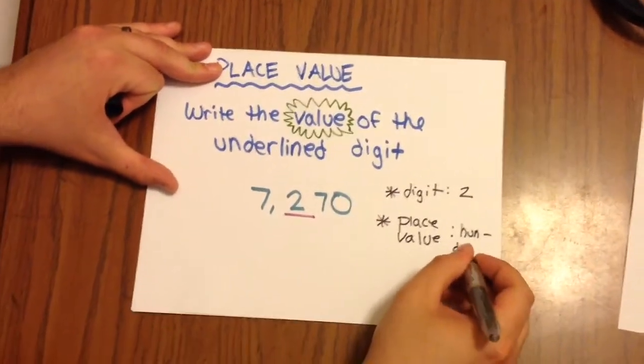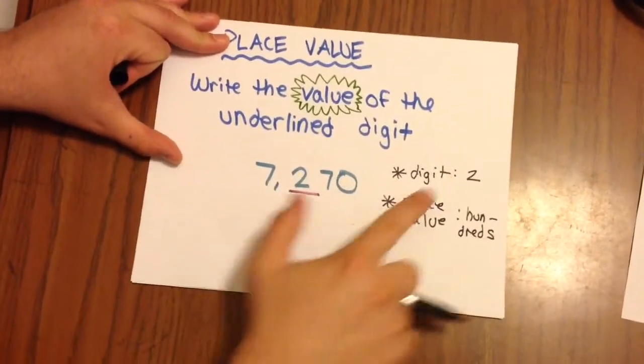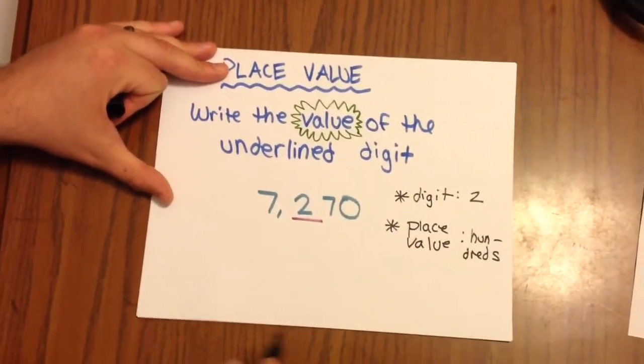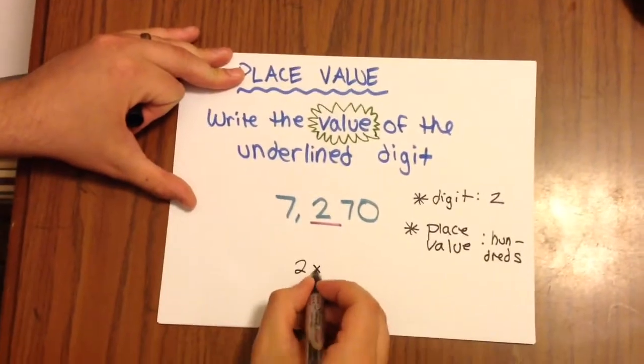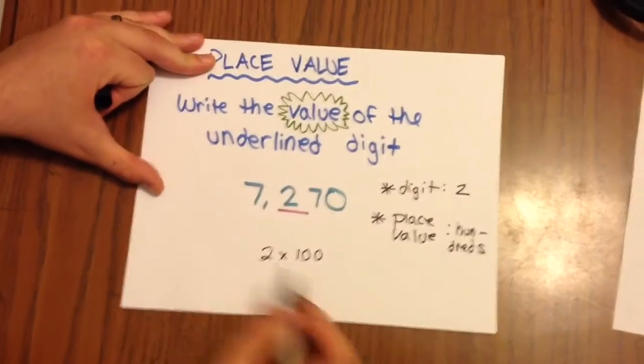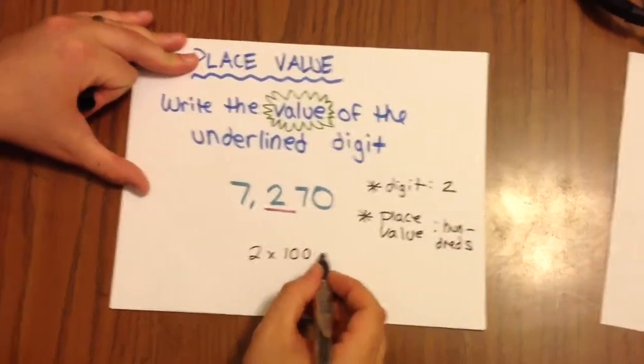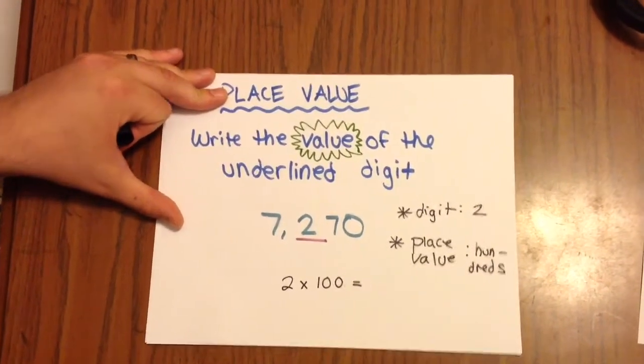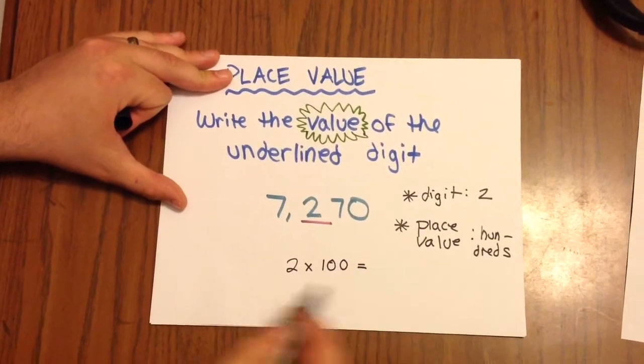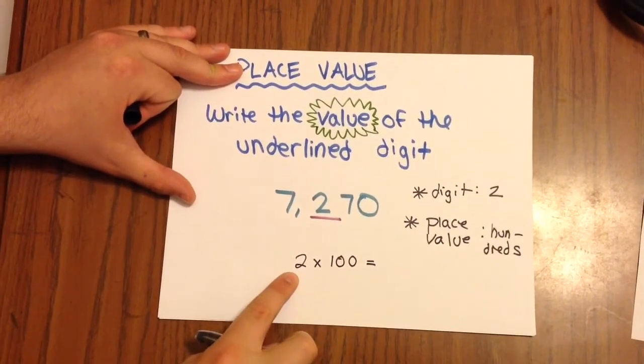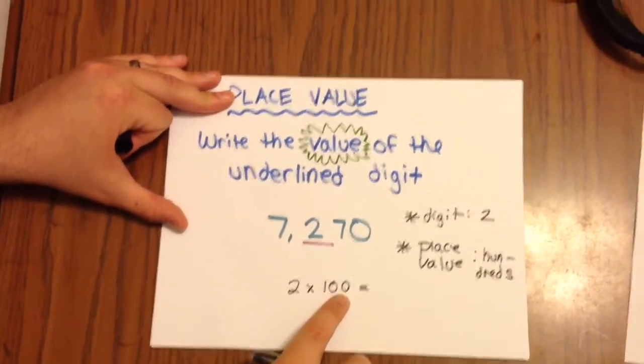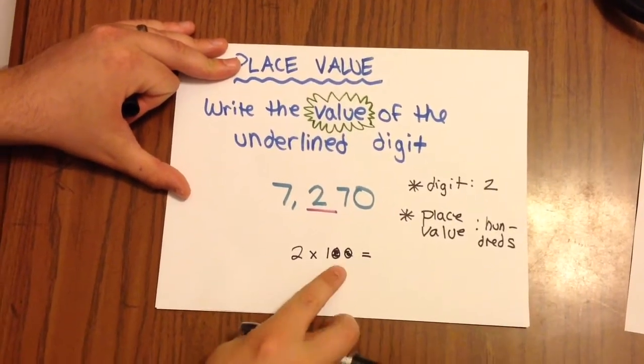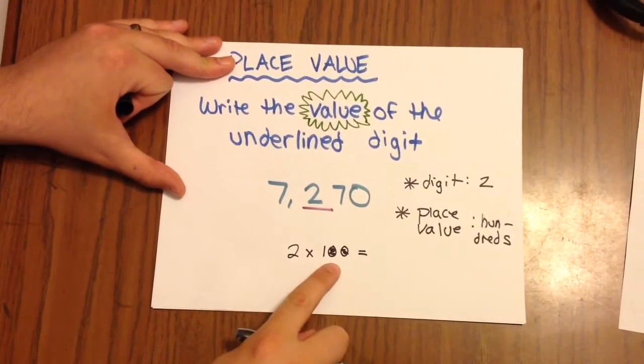So we know the digit. We know the place value. And so now all we have to do is multiply the two together. Two times 100 is going to be, well, here's a trick to find out. Now, whenever you're multiplying a digit by a power of 10, color in the zeros in the power of 10 number. And you'll see you have a real basic fact right here.